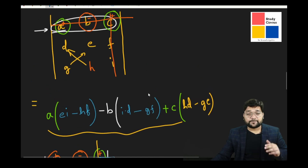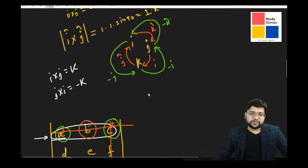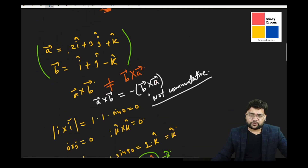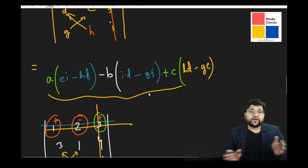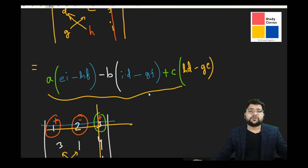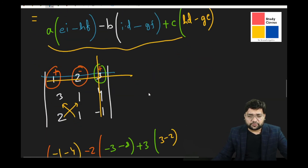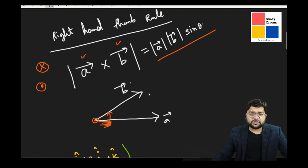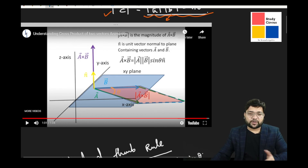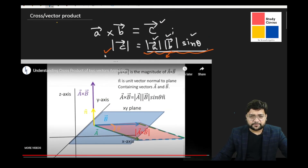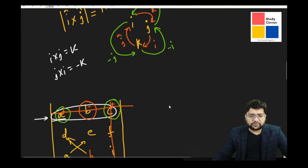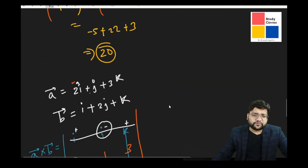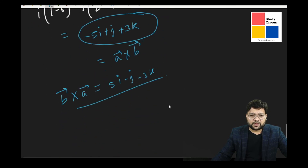If two vectors are perpendicular — the angle between them is 90° — the magnitude of the cross product is simply |A||B| (since sin 90° = 1), which is the maximum. If two vectors are in the same direction, the angle between them is 0°, so sin 0° = 0 and the cross product is zero. These are important special cases to remember. This is the basic information about vector product that we have discussed. You should practice expanding determinants to find cross products. Thank you.